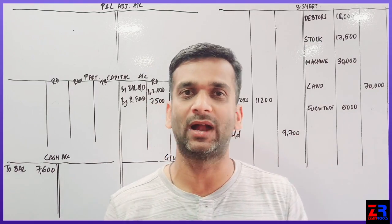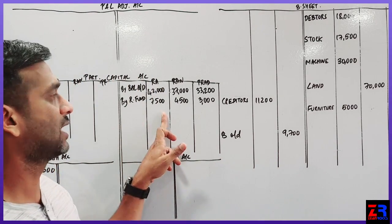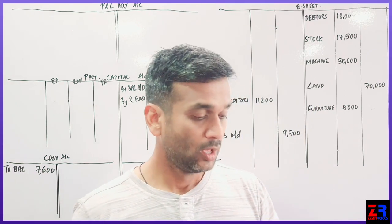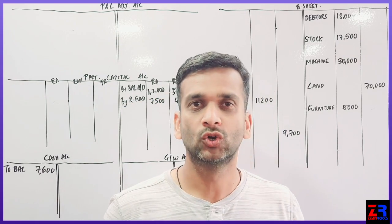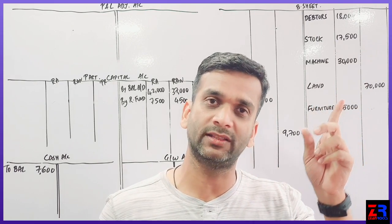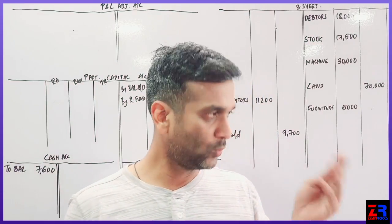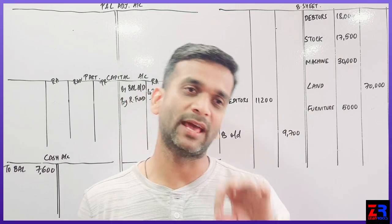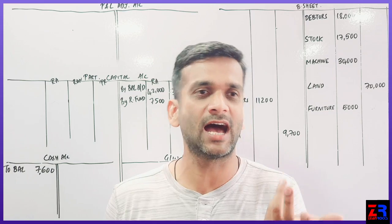Now, let us come to the adjustment part. Adjustment number one talks about goodwill. Goodwill of the firm will be raised in the books at 20000. Goodwill raise kiya. Admission of partner me bhi entry thi. Goodwill account debit to old partners. Old profit share lies. Same logic applies here also. Goodwill raise kiya. So goodwill account debt to old partners. Goodwill case ka old partners.